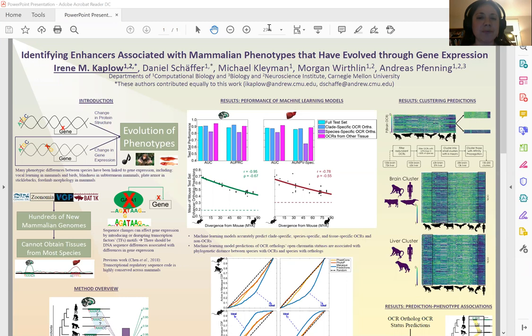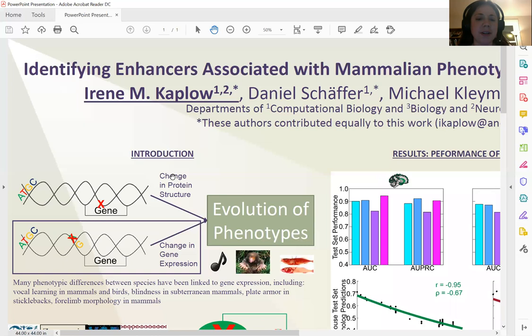Many interesting phenotypes, including vocal learning in mammals and birds, have been shown to evolve at least in part through gene expression. What I mean by this is that the differences we see between species are due to differences in regulatory elements involved in determining when genes are expressed.